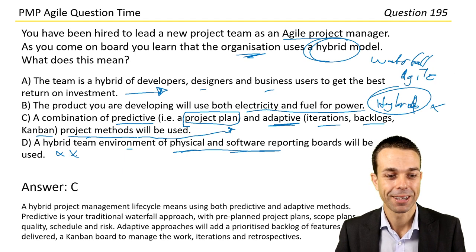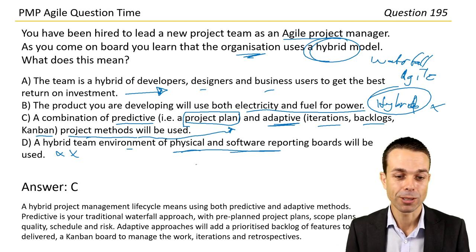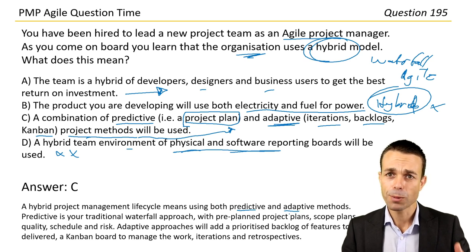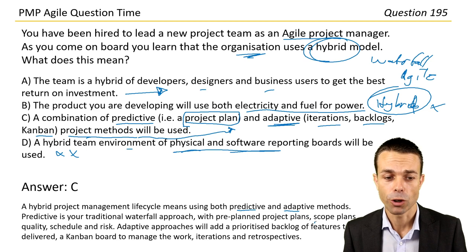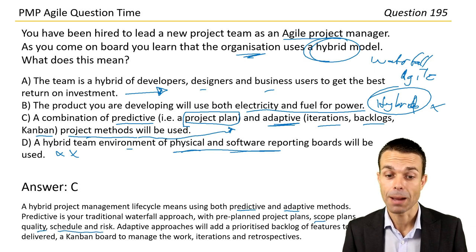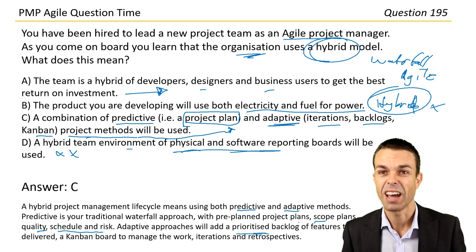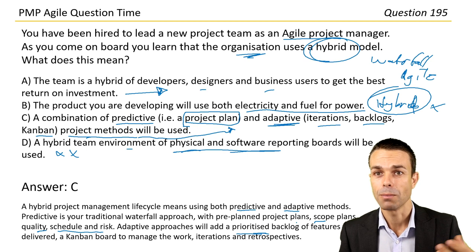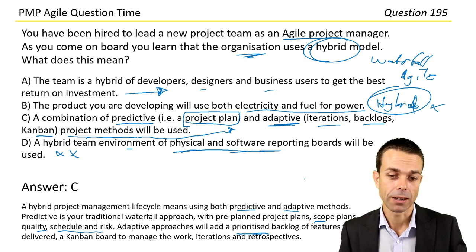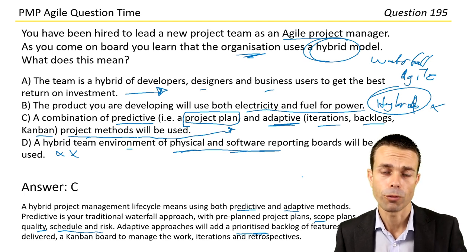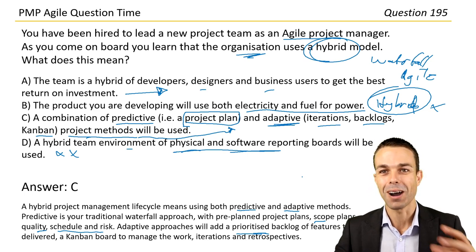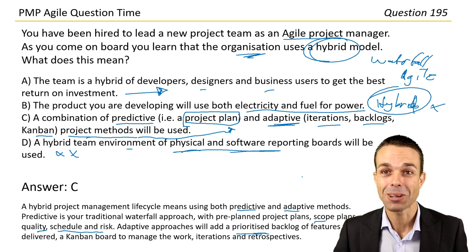Answer C: A hybrid project management method means using predictive and adaptive methods. Predictive being your traditional waterfall approach — pre-planned project plans, scope, quality, schedule, and risk. Adaptive approaches add a prioritized backlog of features, a Kanban board, iteration planning, and retrospectives. All of these things can be added to a waterfall approach to make it a hybrid model.